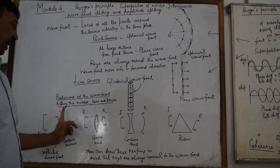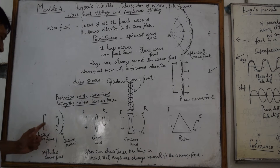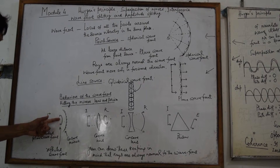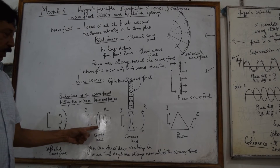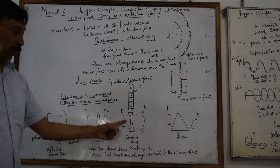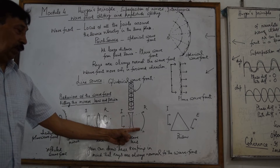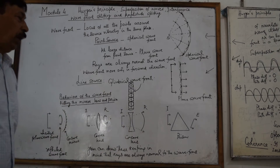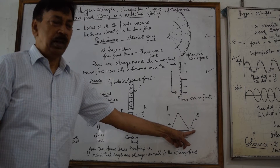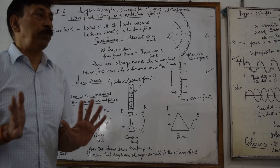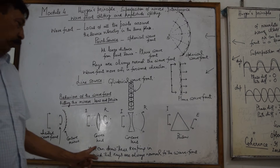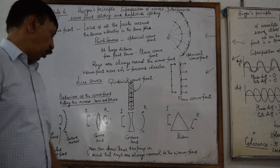The behavior of such wavefronts when they hit a mirror, lens, or prism is shown here. You can see the incident wavefront, which is a plane one, hitting a concave mirror and being reflected — this is the reflected wavefront. Here the plane wavefront hits the lens and the refracted wavefront is shown by R. Here the incident wavefront hits a concave lens, which undergoes refraction, and this is the refracted wavefront. You can also see the plane wavefront hitting the refracting face of a prism and the emergent wavefront. The clue for forming wavefronts can be taken from the ray diagram, because rays are always normal to the wavefront.